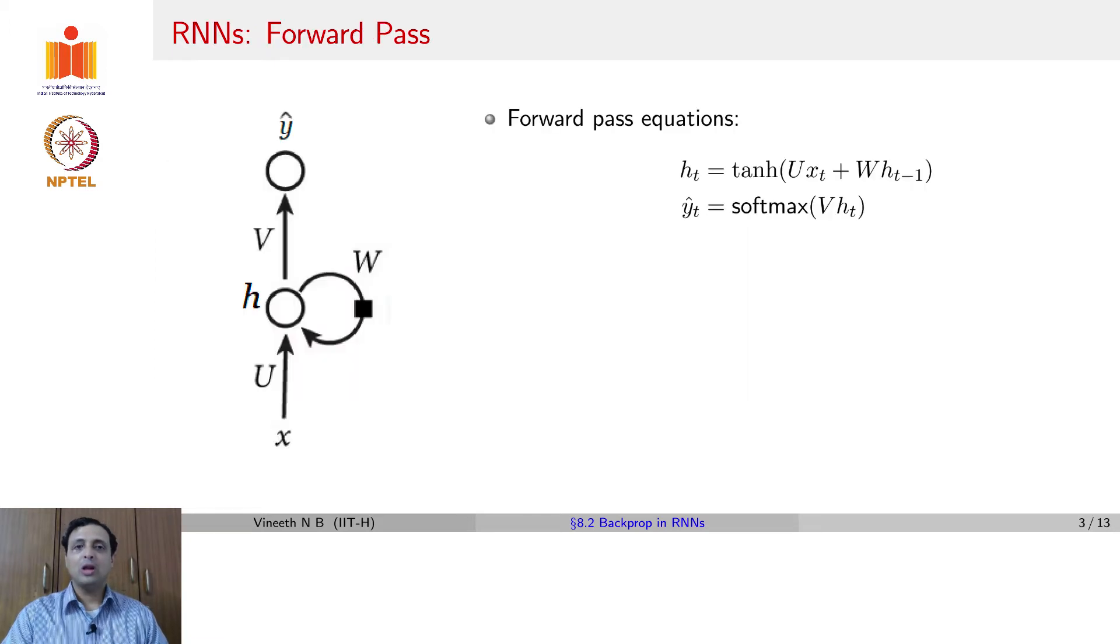Moving on now to backpropagation in RNNs. Let us first revisit the forward pass in RNNs, assuming that this is now your diagram for visualizing RNNs. You have an input x, weights u, hidden state h, weights w, then weights v, that take you to an output y hat.